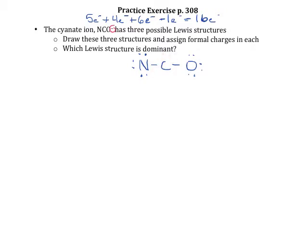We need to figure out how to draw this structure so everyone has eight electrons. One way is for oxygen to share a pair and nitrogen to share a pair. That gives us nitrogen double-bonded to carbon, which is then double-bonded to oxygen (N=C=O). Oxygen has two non-bonding pairs and nitrogen has two non-bonding pairs. Checking: nitrogen feels like it has eight, carbon feels like it has eight, and oxygen also feels like it has eight. So that is one possible Lewis structure.